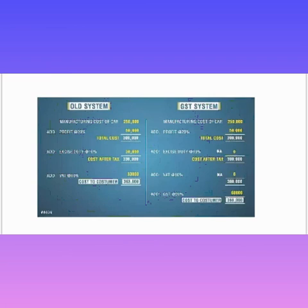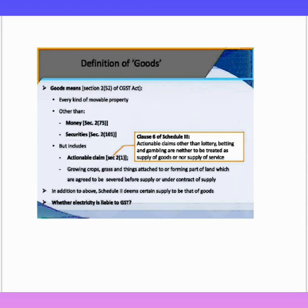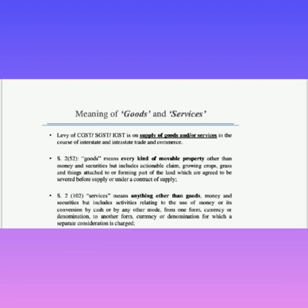Now let's read out a few definitions. Definition of goods: Goods means every kind of movable property other than money and securities, but includes actionable claims, growing crops, grass, and other things attached to or forming part of the land which are agreed to be severed before supply or under a contract of supply.